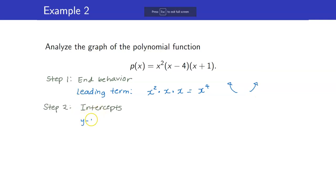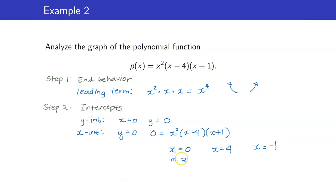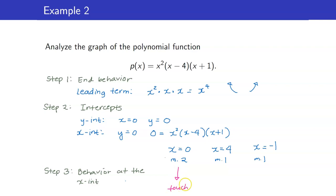Next would be our intercepts. For the y-intercept, we set x to 0, and we get y = 0 because we have x squared. For the x-intercepts, set y to 0. Hence, we have 0 = x²(x − 4)(x + 1). Setting each factor to 0, we get x = 0, x = 4, and x = −1. x = 0 has multiplicity 2, and x = 4 and x = −1 each have multiplicity 1. Even multiplicity means touch, and odd multiplicity means cross.